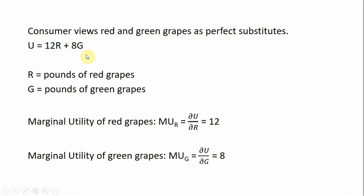We'll start by deriving the consumer's utility function. In this case, utility equals 12R plus 8G. The 12 is the marginal utility for red grapes, and the 8 is the marginal utility for green grapes. If you were just given this utility function and wanted to get back those marginal utilities, you would take partial derivatives. The partial derivative with respect to R equals 12, and the marginal utility of green grapes is the partial derivative with respect to G, which gives back 8.